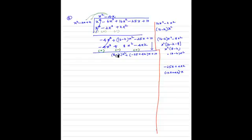Now (8 minus k)x squared divided by x squared gives (8 minus k) in the quotient. Multiplying (8 minus k) by (x squared minus 2x plus k): the x squared term is (8 minus k)x squared.